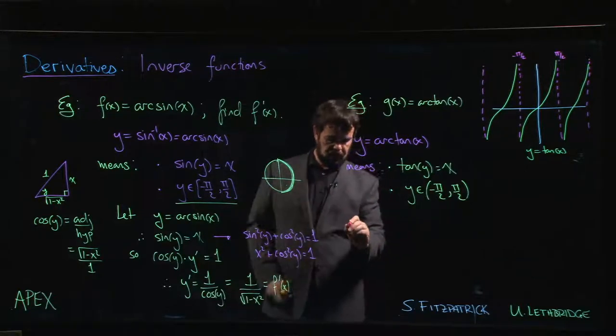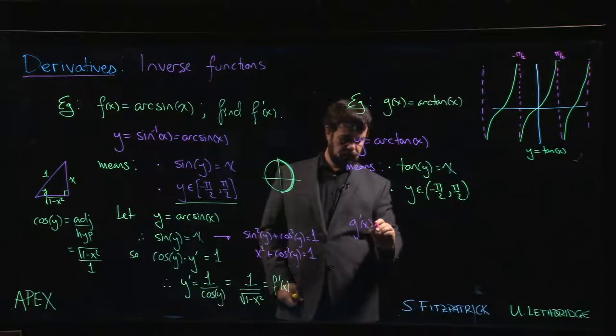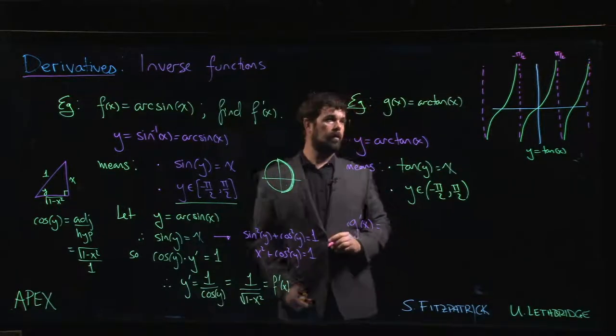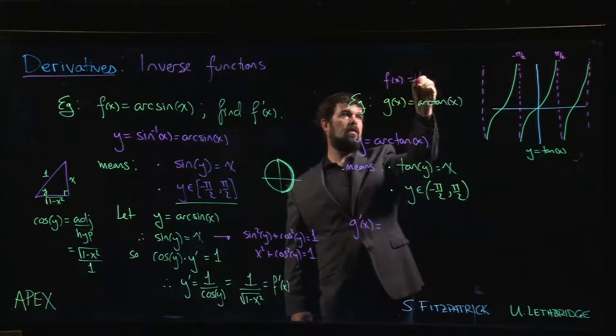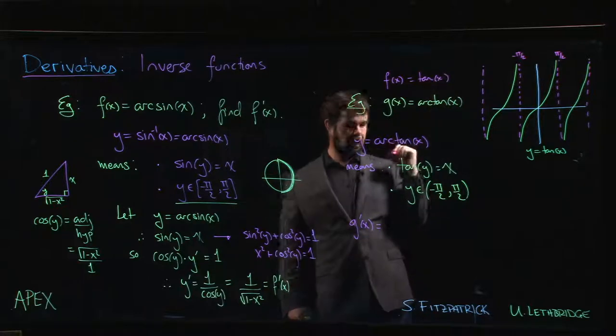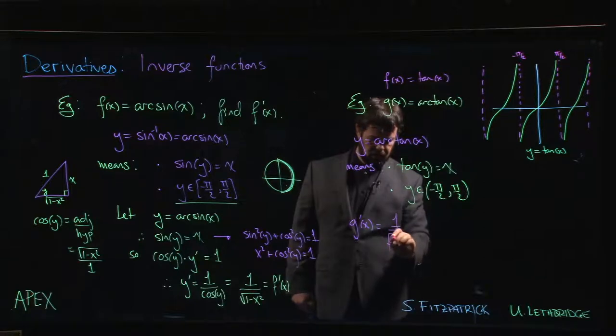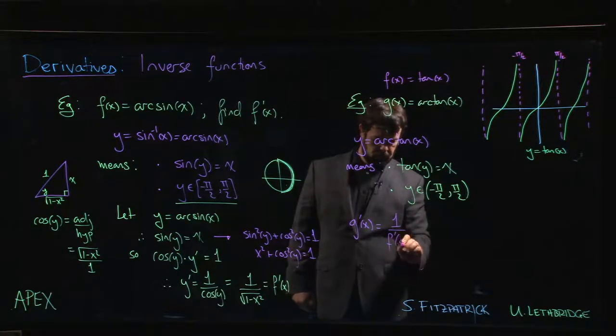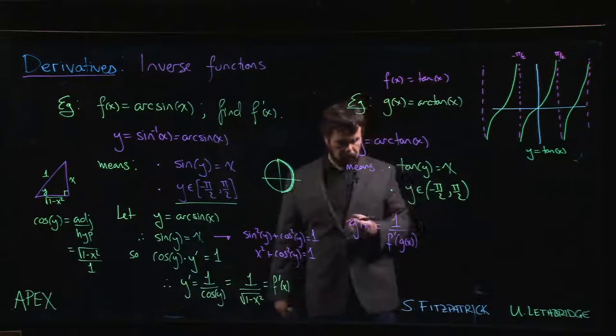So if we said, you know, we could say like this, so g prime of x. So if we said that f of x is tan x, then the inverse functions theorem formula says that g prime should be 1 over f prime of g of x. Okay, so what is that?